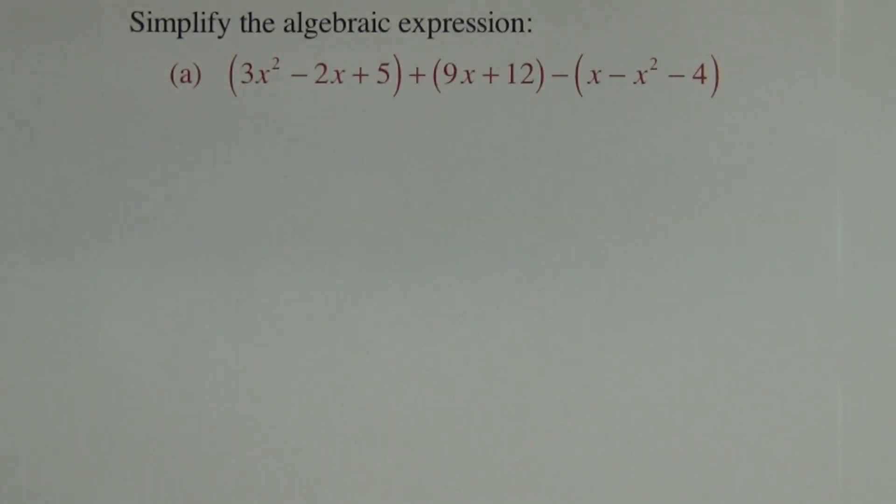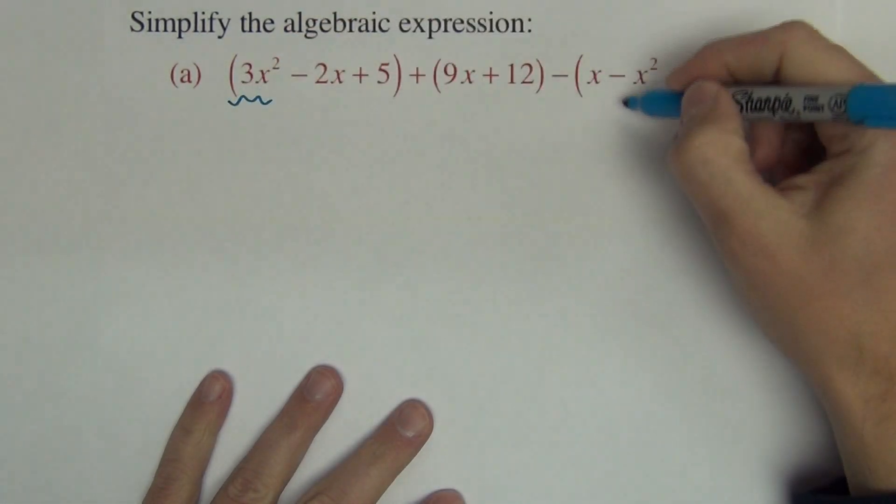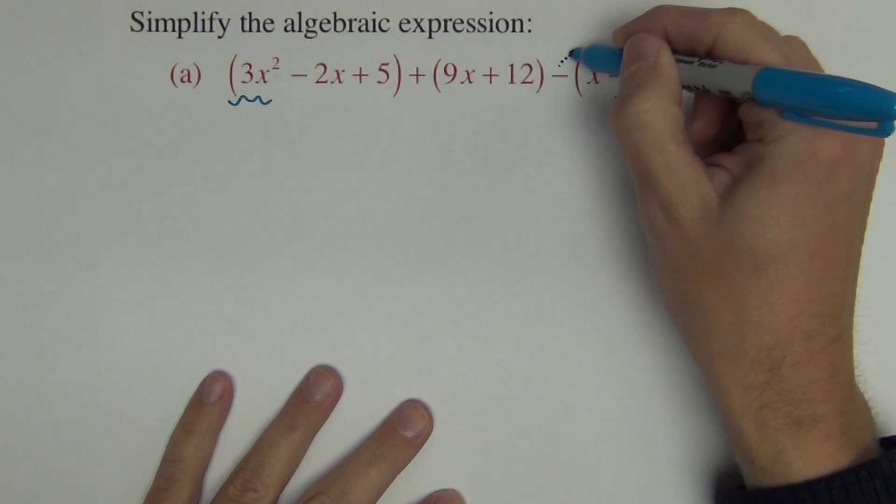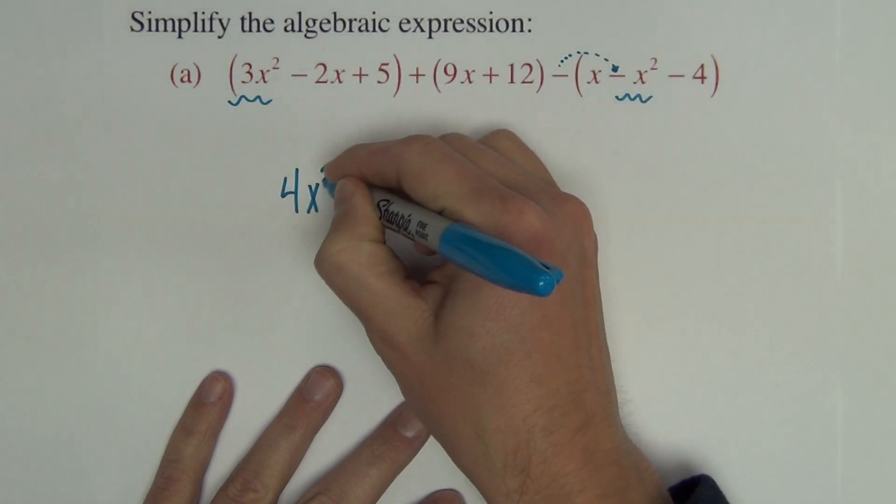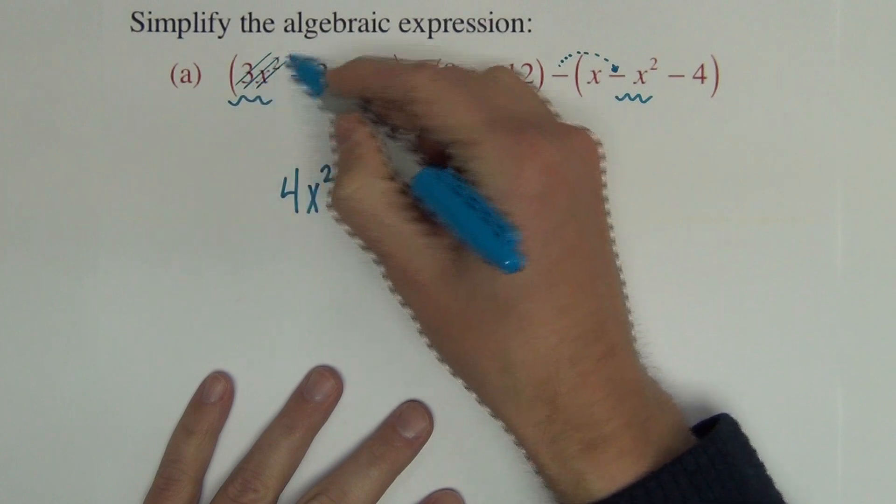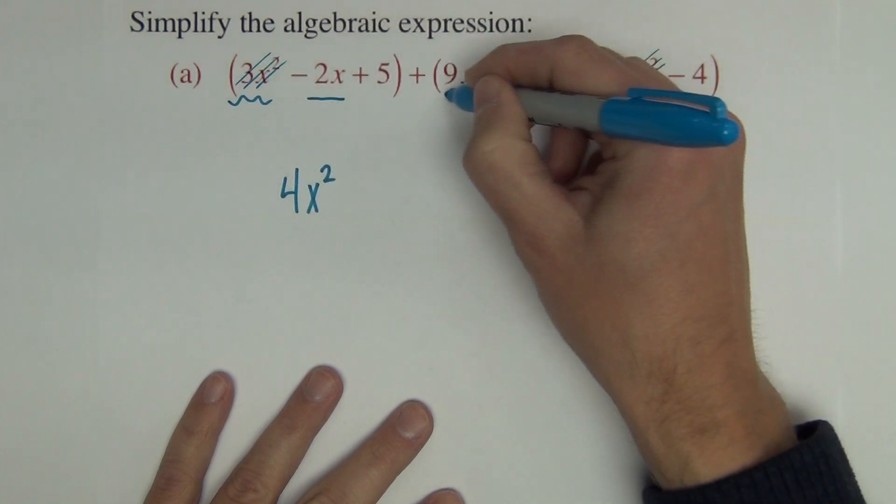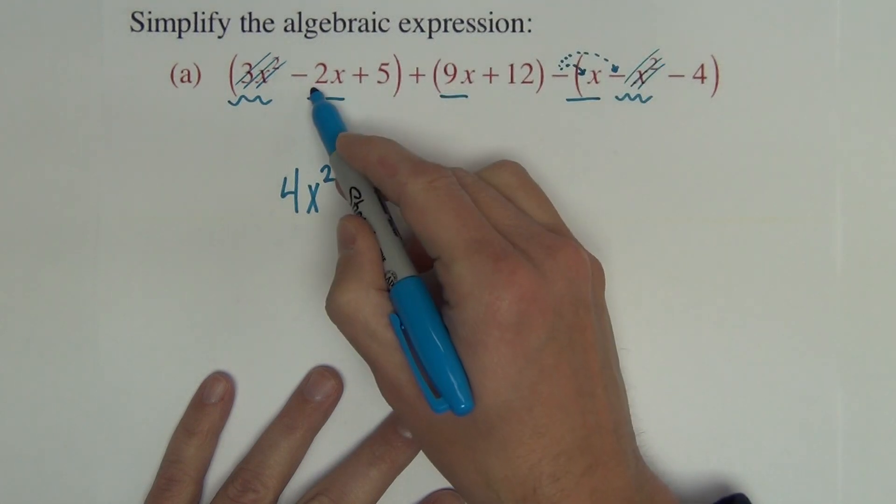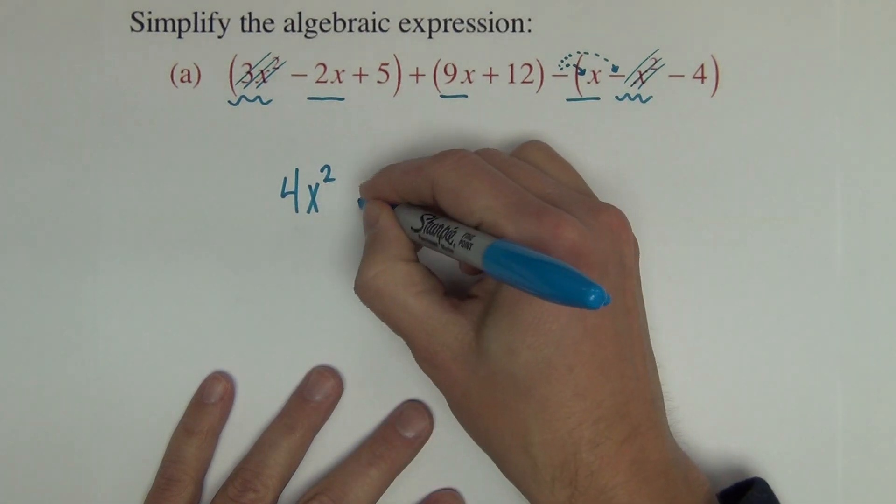Directions ask you to simplify the expression. So essentially in this problem we're looking for like terms. Anything alike we can add together, like this x squared can add to this x squared. 3x squared minus negative. That negative does apply to this negative, making it 4x squared. Some students like to cross those out once they've accounted for them. Next I'm going to look for the x's.